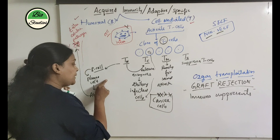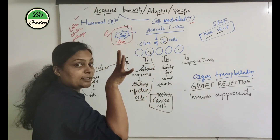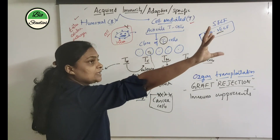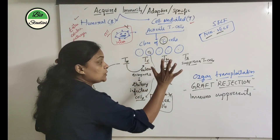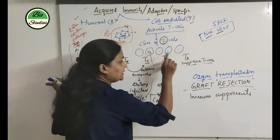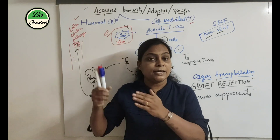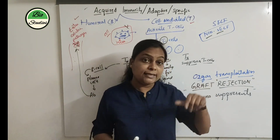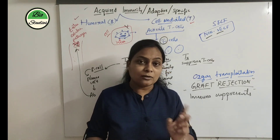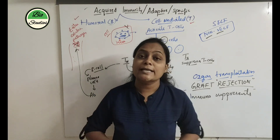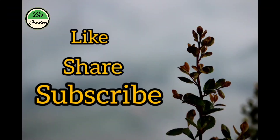TH helper cells are very important — they help B-cells and stimulate cytotoxic T-cells. Cytotoxic T-cells are like bombs — very very dangerous. They detect infected cells and release enzymes that destroy the infected cells. Memory T-cells help mount the immune response when the same pathogen attacks again. In the next video, we have active and passive immunity. Thank you for watching.